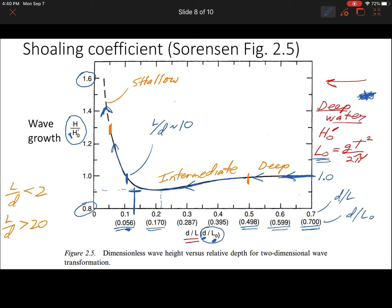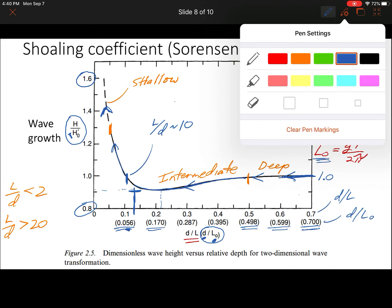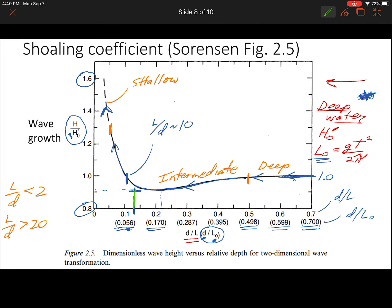We walk our way up to the graph and we're going to walk our way over. You'd have to use a magnifying glass to figure this out, but let's say that we pick off a value of H over H naught prime of 0.93. It's near that minimum that I described earlier.